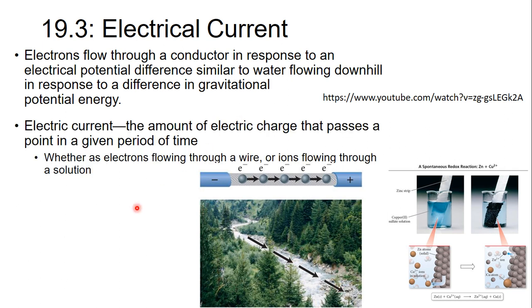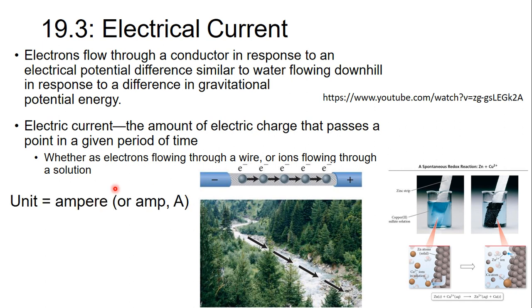We talk about electrical current as just the number of electrons flowing through any given point in a given time, and we measure this in amps.